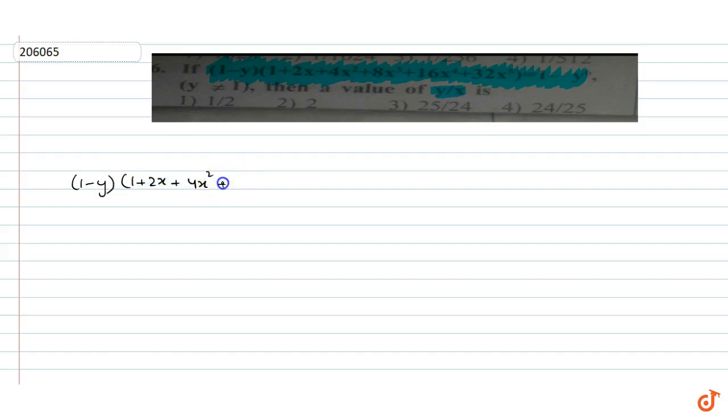The question given is: if (1 minus y) into (1 plus 2x plus 4x squared plus 8x cubed plus 16x to the power 4 plus 32x to the power 5) is equal to 1 minus y to the power 6, then the value of y by x is equal to? We have been given that expression equated to 1 minus y to the power 6.